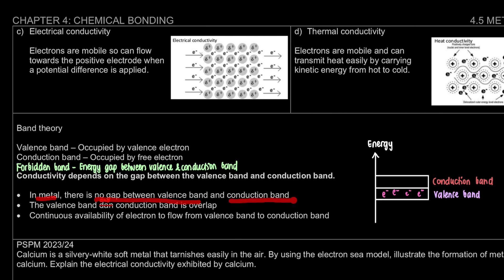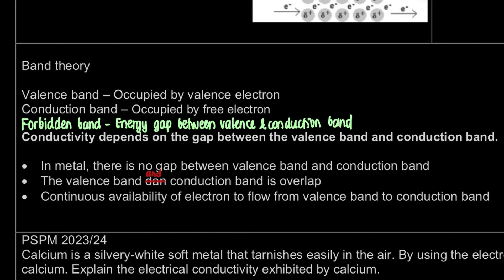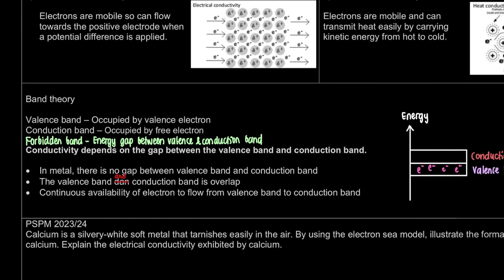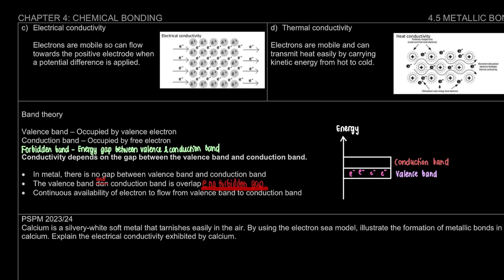In metal, there is no gap between the valence band and the conduction band — they overlap. They are very close to each other and can overlap. For metal, we don't have an energy gap here, so we can say there is no forbidden gap for the case of metal.